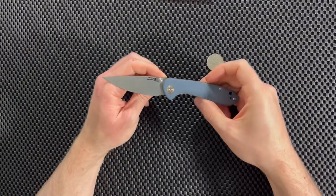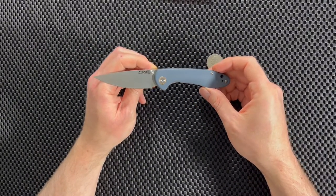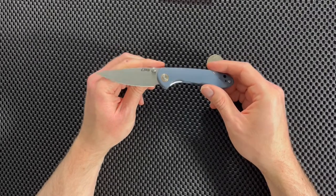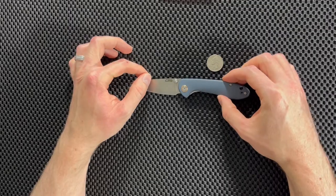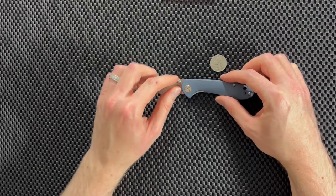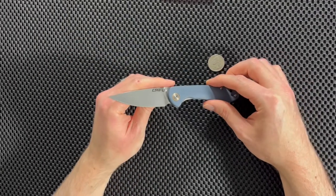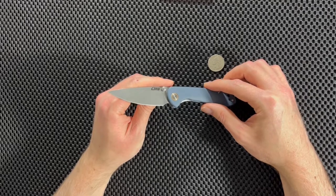All right guys, so as you can see we have the CJRB Feldspar here, and just a little bit of background. CJRB is actually the sub-brand of another company called Artisan Cutlery, and Artisan Cutlery makes awesome knives.